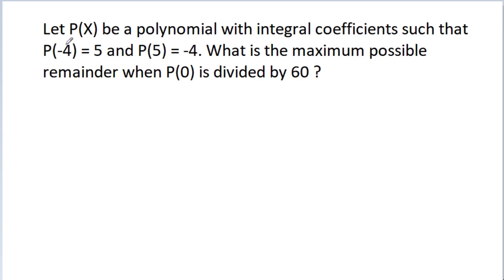In this video, we have given that P(x) is a polynomial with integral coefficients such that P(-4) is equal to 5 and P(5) is equal to -4. Then, what is the maximum possible remainder when P(0) is divided by 60? So, first method.